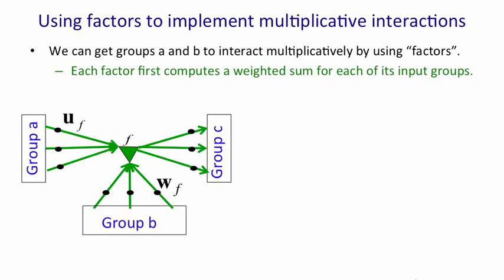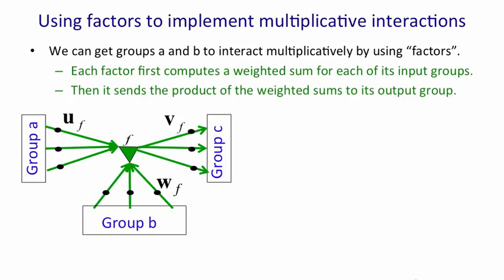Similarly, we take the vector state of group B and we multiply it by the weight vector W, and we get another number at the bottom vertex of the triangle. We now multiply those two numbers together, and that gives us a number, a scalar, and we use that scalar to scale the outgoing weights V in order to provide input for group C. So the input to group C is just the product of the two numbers that come into the two vertices of the triangle times the outgoing weight vector V.